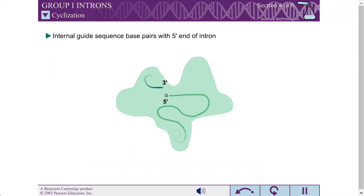The internal guide sequence is also capable of base pairing with a sequence near the 5' end of the excised intron. The intron also has a guanosine at the 3' terminus. This guanosine can bind in the guanine binding pocket.